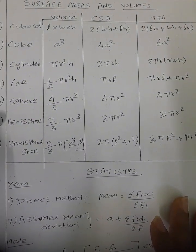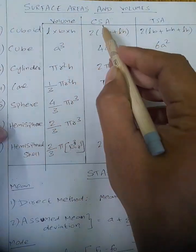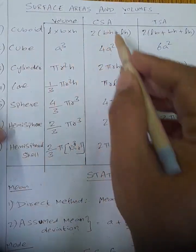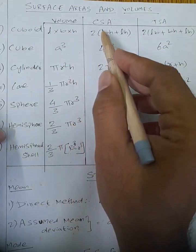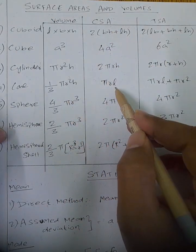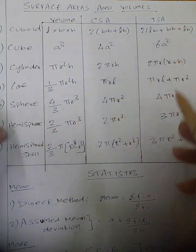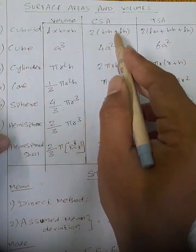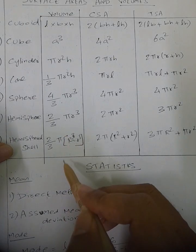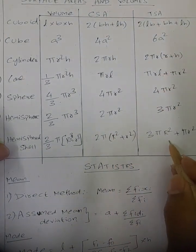Surface area and volume: three key measures — volume, curved surface area (CSA), and total surface area (TSA). Cuboid: volume = L×B×H, CSA = 2(BH+LH), TSA = 2(LB+BH+LH). Cube: volume = a cube, CSA = 4a square, TSA = 6a square. Cylinder: volume = pi r square H, CSA = 2 pi rH, TSA = 2 pi r(r+H). Cone: volume = 1/3 pi r square H, CSA = pi rL, TSA = pi r(L+r). Sphere: volume = 4/3 pi r cube, CSA = TSA = 4 pi r square. Hemisphere: volume = 2/3 pi r cube, CSA = 2 pi r square, TSA = 3 pi r square. Hemispherical shell: volume = 2/3 pi (R cube minus r cube), outer radius R, inner radius r.